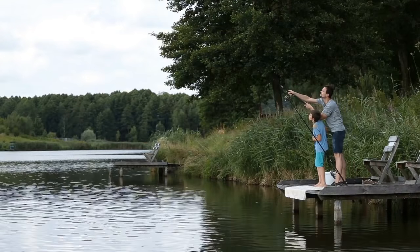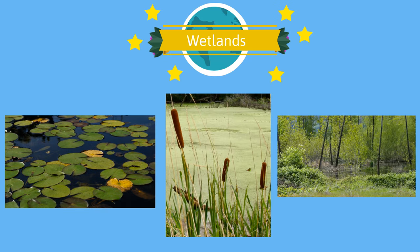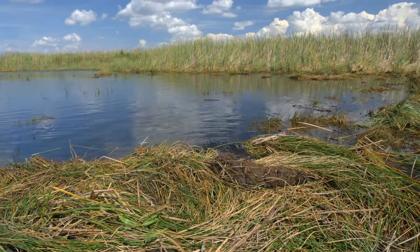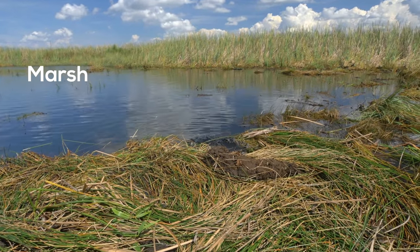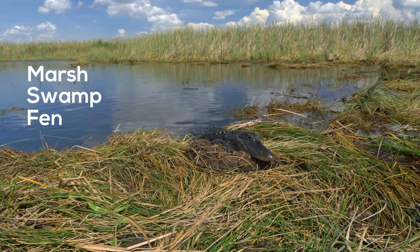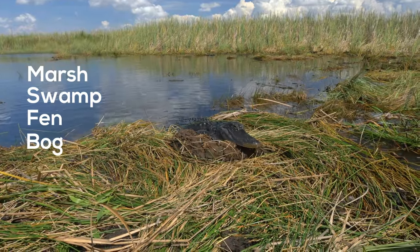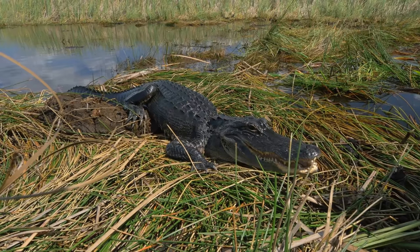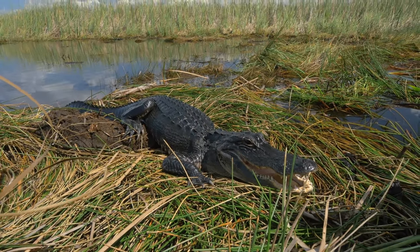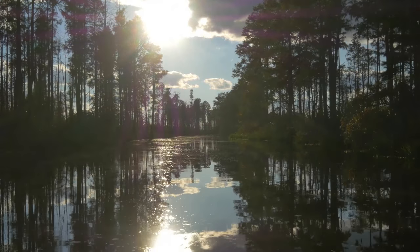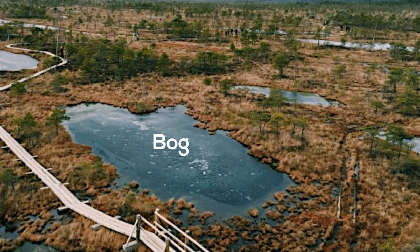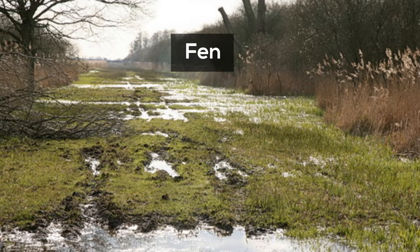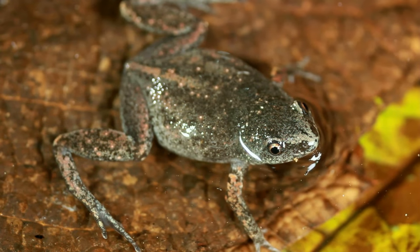Wetlands are areas that are saturated with water either all year or for long periods of time. A marsh, swamp, fen, and bog are all considered wetlands. A marsh is known for the grass and reeds found in it. Swamps contain trees, and bogs and fens are peat-producing wetlands dominated by moss. In a marsh and swamp you will find frogs, snakes, and gators.